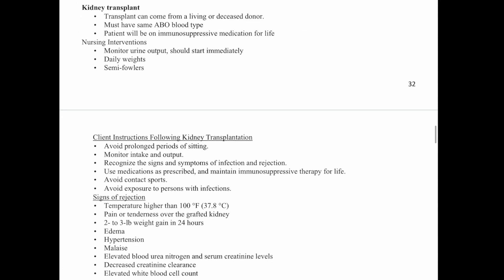For kidney transplant, a transplant can come from a living or deceased donor. The patient must have the same blood type and compatible antibodies. The patient will be on immunosuppressive medication for life. Nursing interventions include monitoring urine output, which starts immediately after the transplant, daily weights, and semi-Fowler's position.